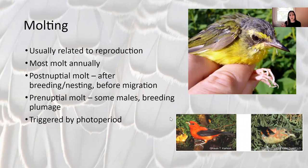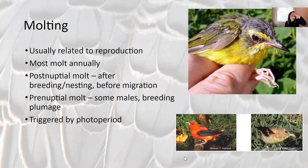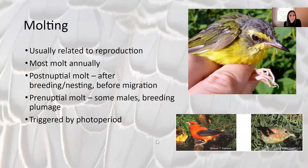Molting happens usually annually in birds and is usually related to reproduction. The postnuptial molt is after breeding and nesting and before migration. A prenuptial molt is what we see in males that have bright breeding plumage — they molt right before breeding to get nice bright plumage, then molt again after. Molting is triggered by photoperiod, the length of day. When birds are molting they look a little raggedy, so if you see a bird that looks unhealthy, sometimes it's just that they're in between plumages.